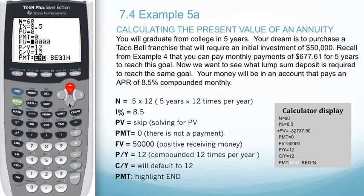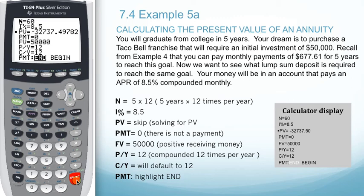If we arrow up to present value to decide what the lump sum deposit should be, we want to solve by hitting Alpha and Enter. In order to have $50,000 in five years at 8.5% compounded monthly, we need to make sure that we deposit $32,737.50.